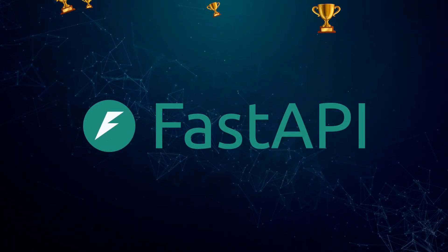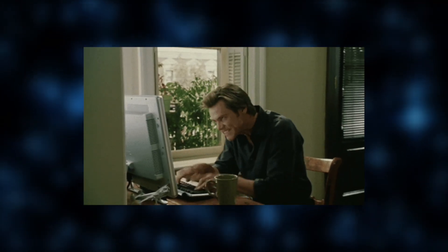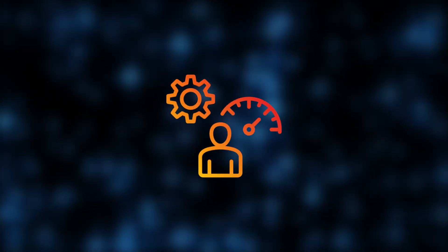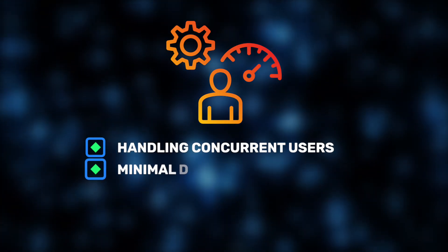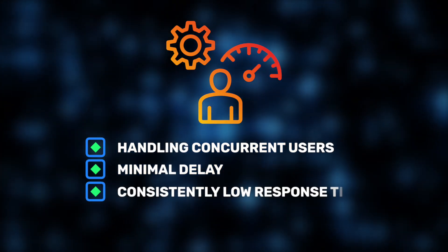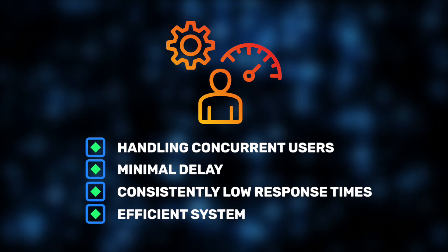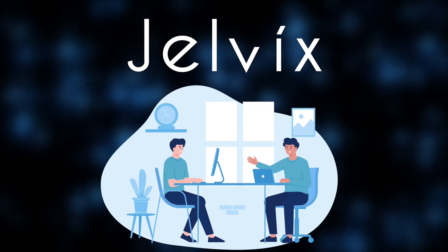Next up: speed. In this category, FastAPI clearly takes the lead. During development, Team B's FastAPI app showed itself fast. Even under load, it handled hundreds of concurrent users with minimal delay. Response times were consistently low, and the system stayed efficient. But what's the secret? Our Jelvix experts will break it down for you.